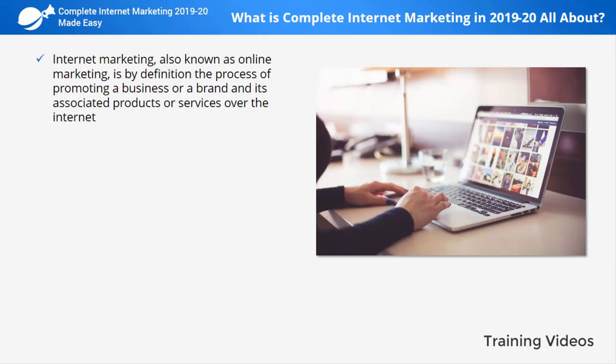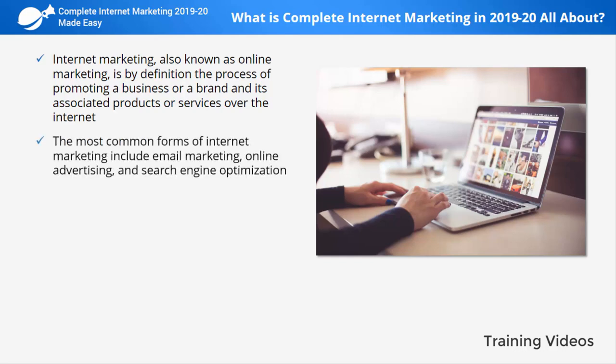What people struggle with when trying to understand internet marketing is how to actually do internet marketing, and there are a lot of methods out there. The most common forms include email marketing, online advertising, and search engine optimization. There also exist other more indirect forms, such as affiliate marketing, and more modern formats such as video marketing.